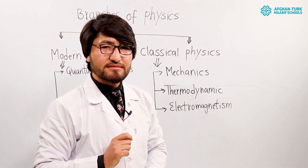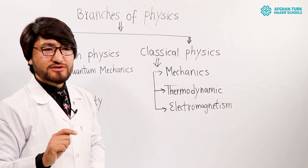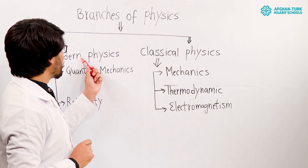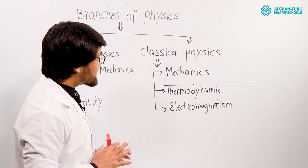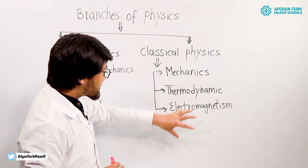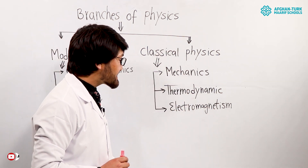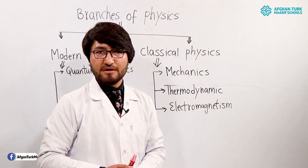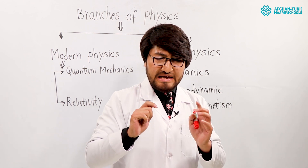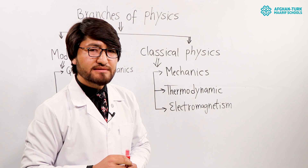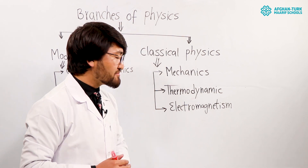Physics is divided in how many parts? Physics is totally divided in two parts: classical physics and modern physics. What is classical physics? Classical physics is divided in three parts: mechanics, thermodynamics, and electromagnetism.